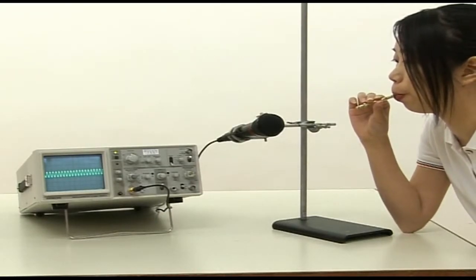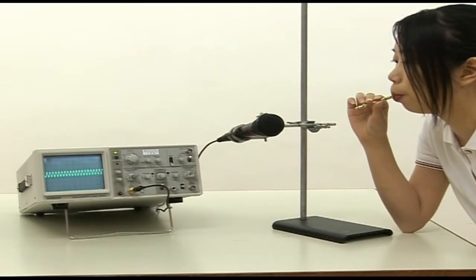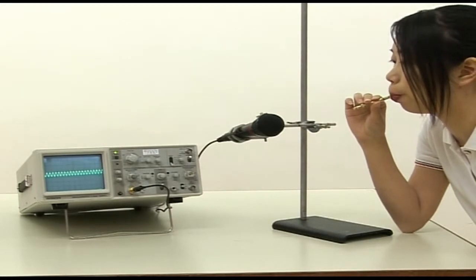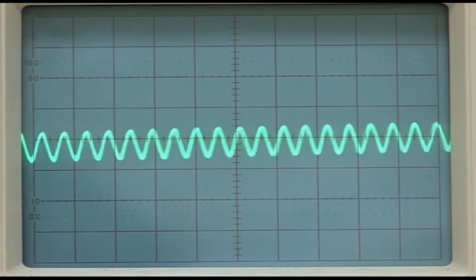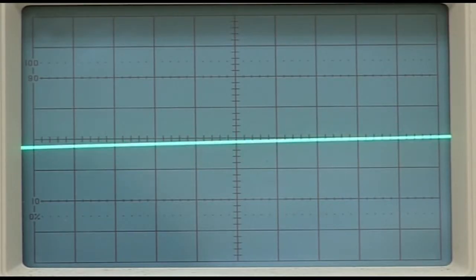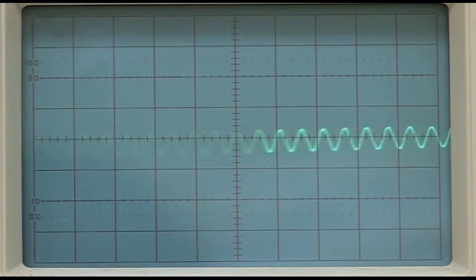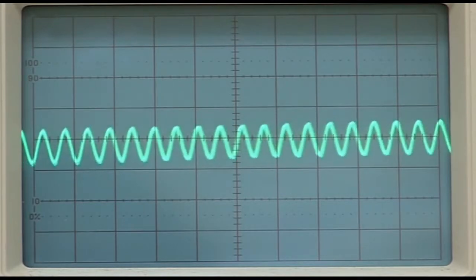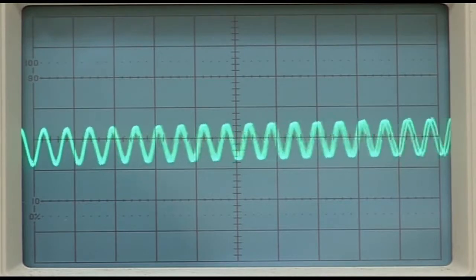We can see that a waveform is shown on the screen. This shows that the whistle does produce a sound. Calculate the frequency of the inaudible sound from the waveform. Do you know why dog whistles are often called silent whistles?